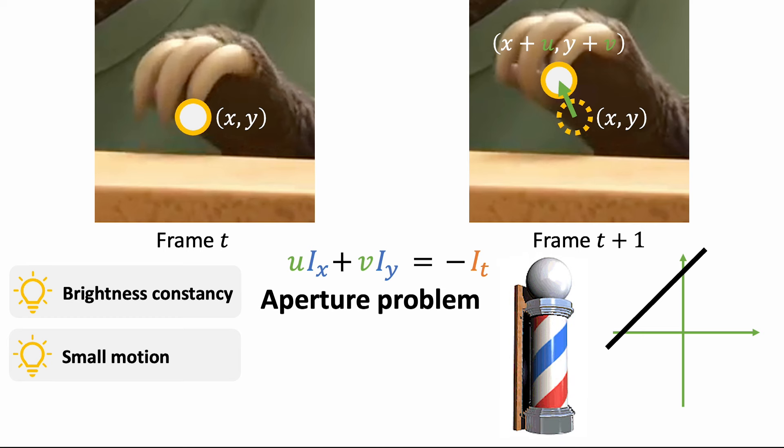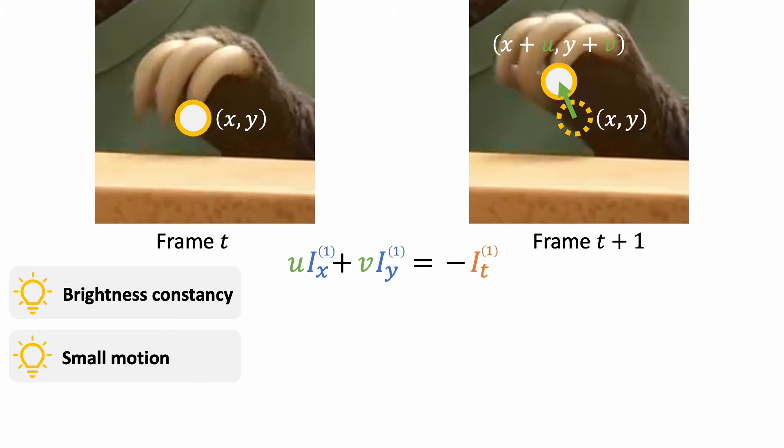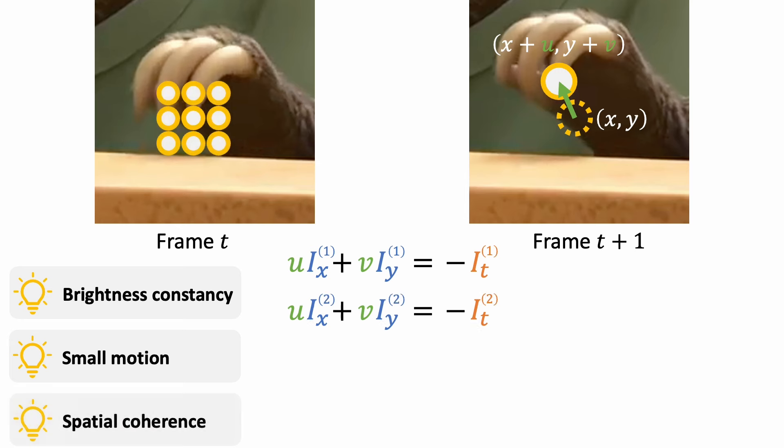The barber's pole is an example illustrating such ambiguity. The motion we perceive goes upward, but the true motion is rotating along the z-axis. So how do we resolve this ambiguity? We can assume that all nearby points move together. This gives us more equations to estimate the motion.